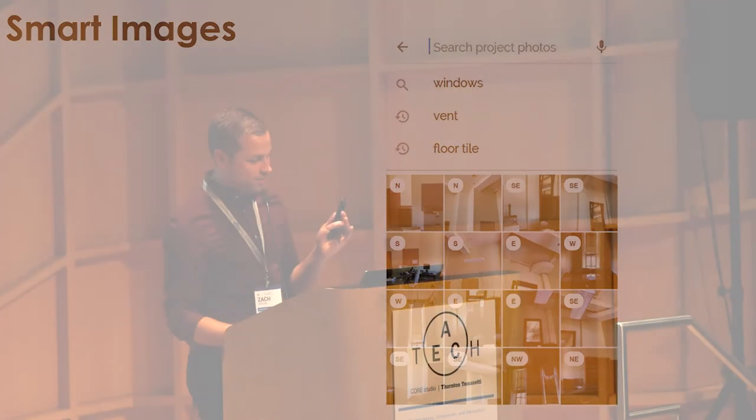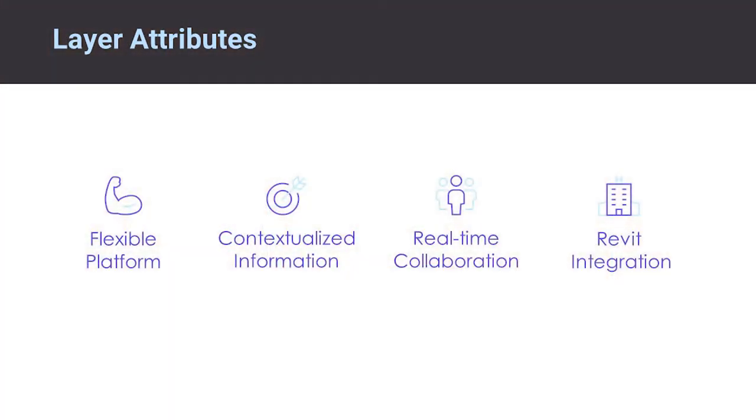Once that project wrapped up, we realized that if we broadened this application and some of the features and components within it, this could really apply to any project. Even beyond design — how could this apply throughout construction and into operations as an extended documentation tool? We took a step back and identified the key attributes that actually made this tool useful to our project team. These are the four: it had to be a flexible platform; the idea of contextualized information was incredibly important; real-time collaboration of information and data was important; and actually connecting this to the tool that designers use to produce projects.